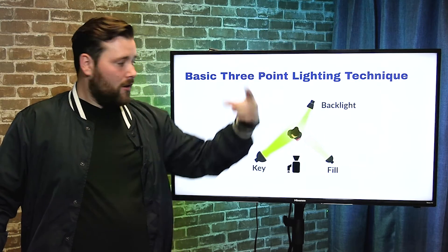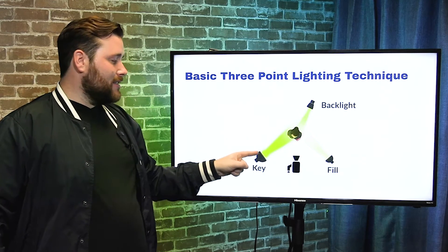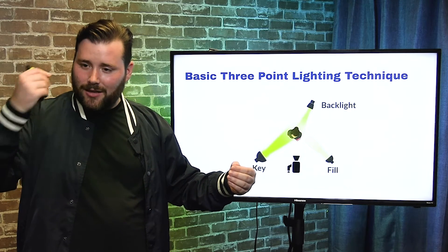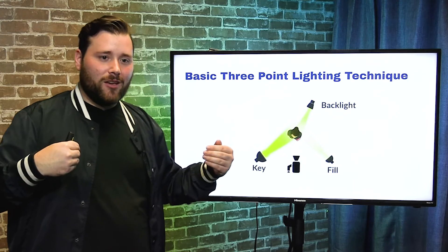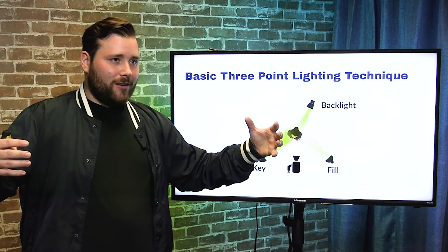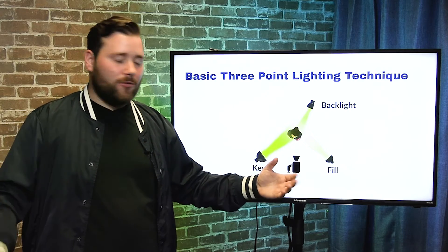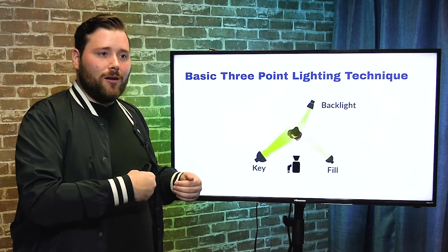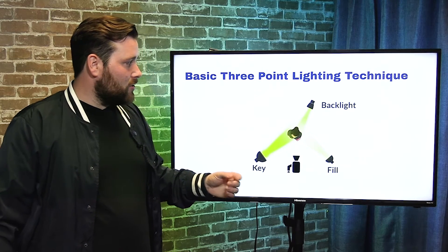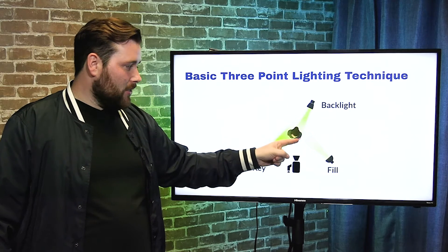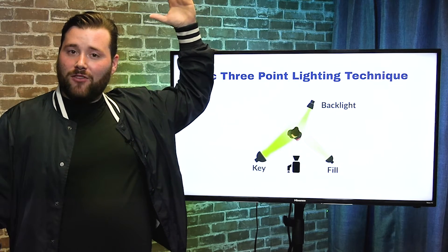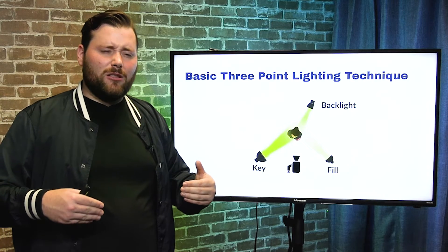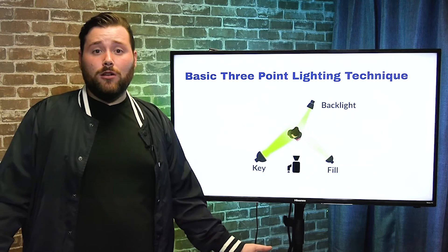If the key light is bright, you'll get harsh shadows on the other side, so you add a fill light — another light on that side, but not as strong as the key. You want some contouring — you don't want to be overtly lit. The fill light softens shadows so you get nice highlights on one side and controlled shadow on the other. The third is a backlight — dimmer than the fill — shining from above the head to separate you from your background and make things look more professional.